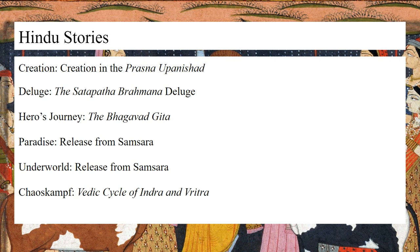The deluge myth occurs in the Shatapatha Brahmana, in which there is a flood myth tied to Vishnu, who saved the human Manu from a flood by telling him to care for a fish and build a ship. He would fasten the ship to the fish, which had magnified in size after his care, and the fish pulled him to the northern mountains, saving him from the flood waters.